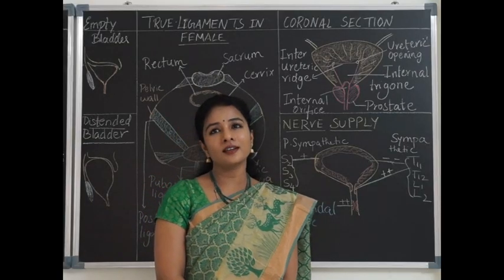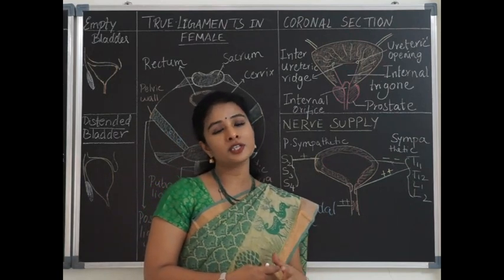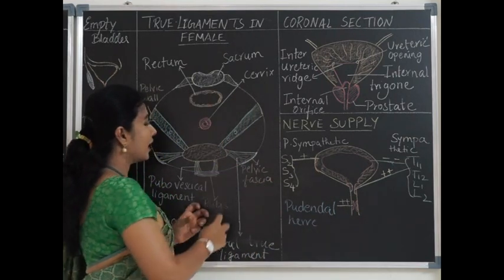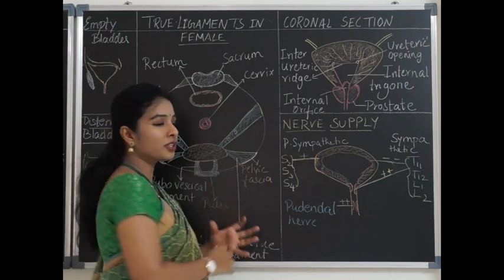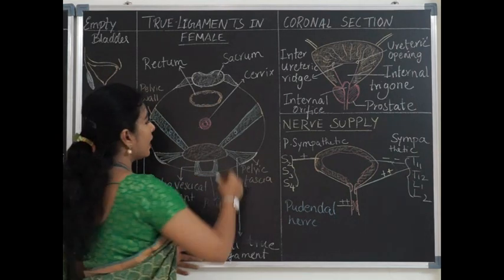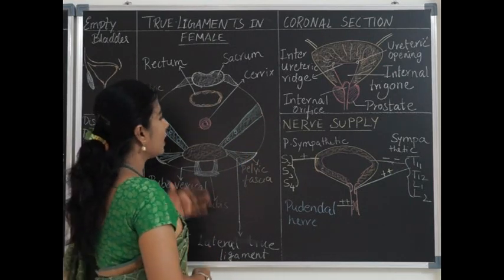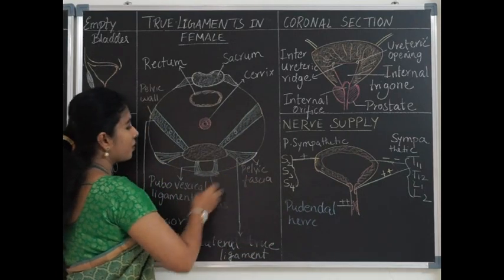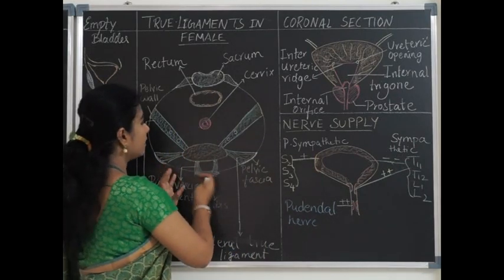The retropubic space is the gap between the pubis and the urinary bladder anteriorly, filled with fat. It is a potential space for the bladder to distend, and surgically very important — surgeons approach the urinary bladder or prostate through this space. Its boundaries: anteriorly — the pubis; posteriorly — the posterior true ligaments; superiorly — the peritoneal reflection forming the paravesical fossa; inferiorly — the urogenital diaphragm.